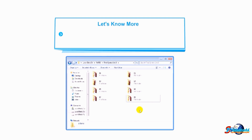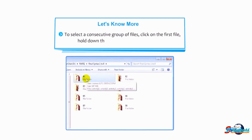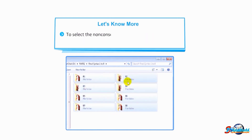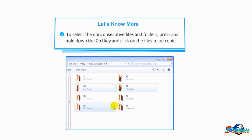To select a consecutive group of files, click on the first file, hold down the Shift key, and click the last file. To select non-consecutive files and folders, press and hold the Ctrl key and click on the files to be copied.